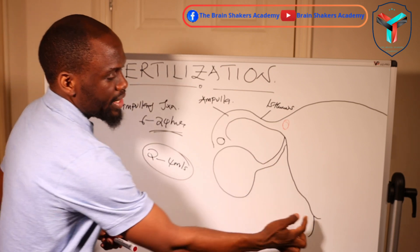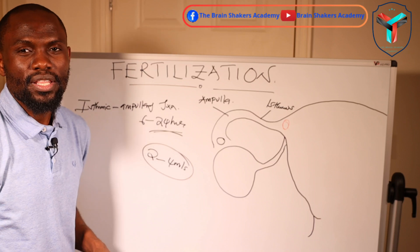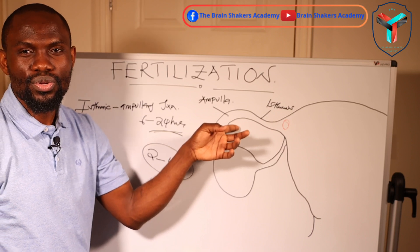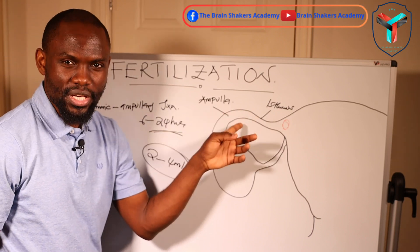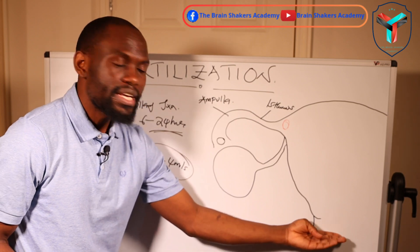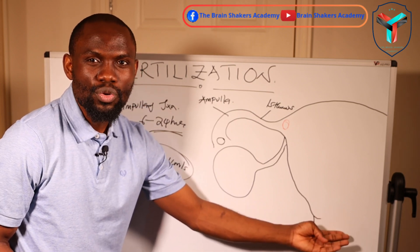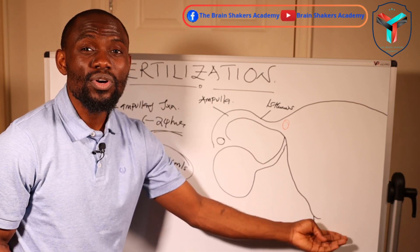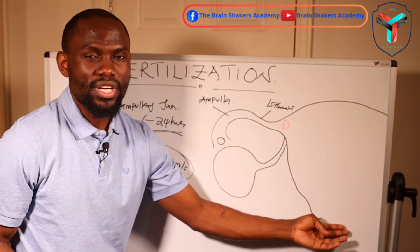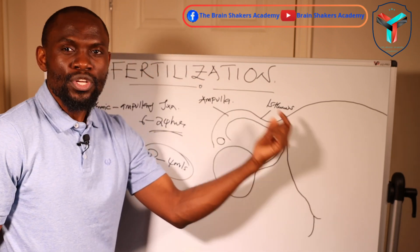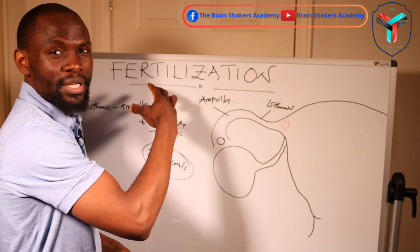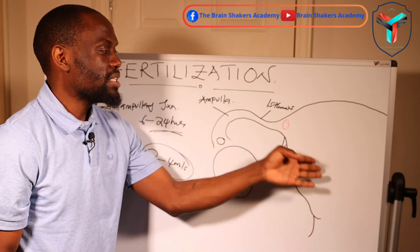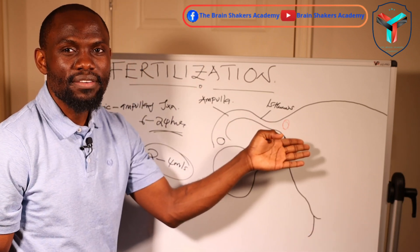Any spermatozoa that gains access through the cervix will proceed and swim until it reaches the ampullary region. Spermatozoa remaining in the acidic vaginal environment will be denatured and remain viable for about 24 to 48 hours. Those that reach the fallopian tube, where the environment is more conducive, can remain viable on average for about 3 to 5 days.